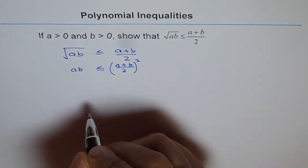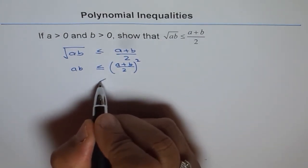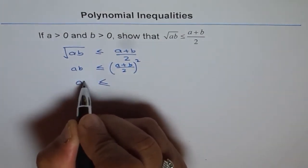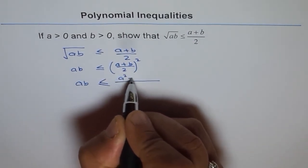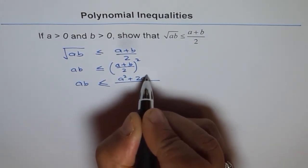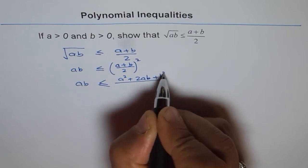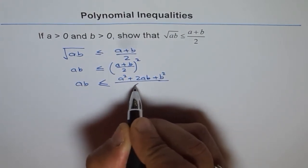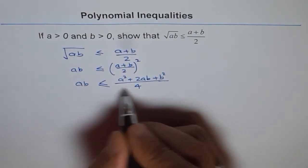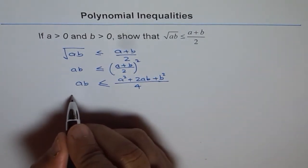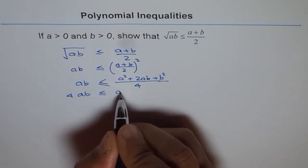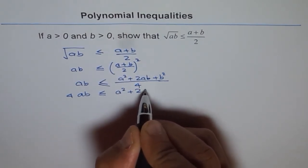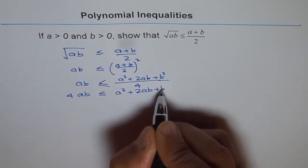And now we can expand this. So if I expand this, then I get AB equals to A square plus 2AB plus B square over 4. Now we can cross multiply and write 4AB here. So we get 4AB is less than or equal to A square plus 2AB plus B square.